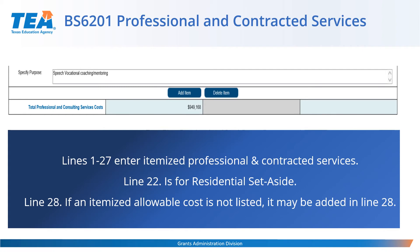Districts may add or remove additional itemized services by clicking on the Add Item or Delete Item buttons. Once all itemized professional and contracted services have been budgeted in Part 3, save the schedule. The system will validate that the amount in Line Total Professional and Consulting Services matches the dollar amount budgeted in Part 1, Line 2. If these amounts do not match, an error will populate and the district will need to correct the schedule.